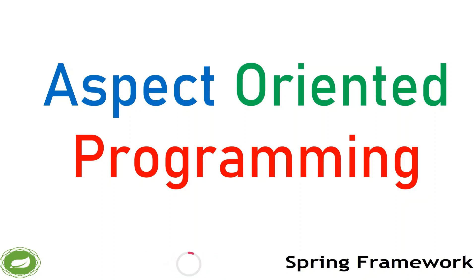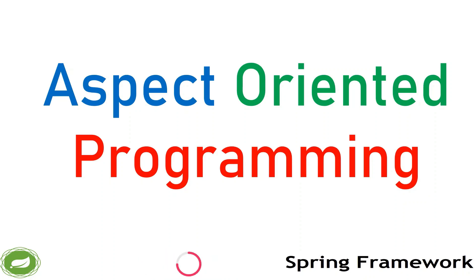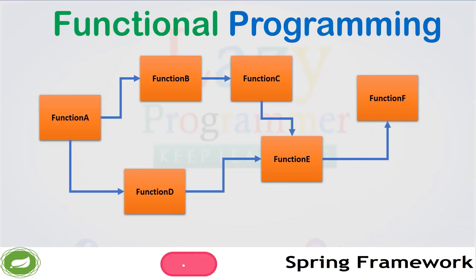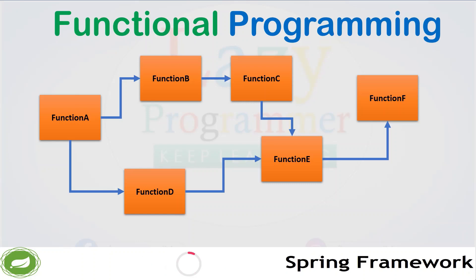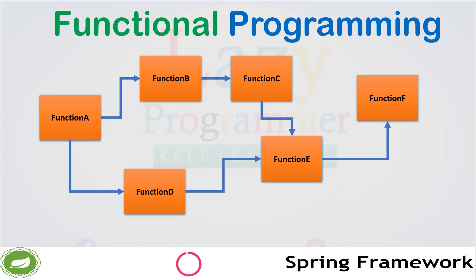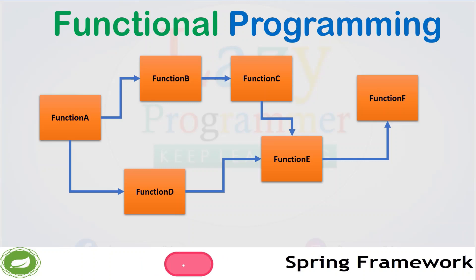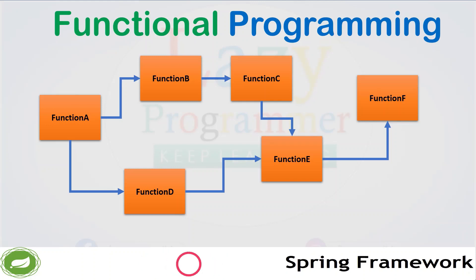Before we deep dive into aspect-oriented programming, let's try to understand a couple of other programming paradigms briefly as well. Let me start with functional programming first. In case of functional programming, we think the solution in the form of functions. A function is designated to do a specific task, and one function can call other functions. When the final function's execution is complete, the program execution has been completed. The grouping of all those functions is known as a single program.